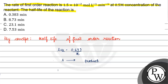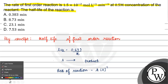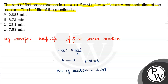We have to write the rate of reaction. Rate of reaction is basically equal to the rate constant into the concentration of the reactant raised to the power 1, because we have mentioned that it is a first order reaction. That's why we have the power 1.